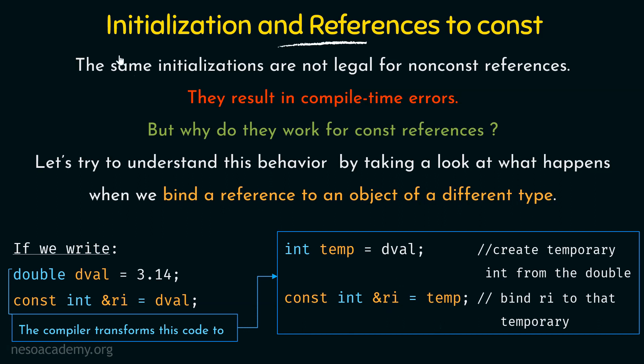That was about initialization and references to const. With that, I hope you have understood what we mean by references to const, how they differ from normal or ordinary references, and how the code works in the background when there is a type mismatch. Thank you for watching, and see you in the next one.